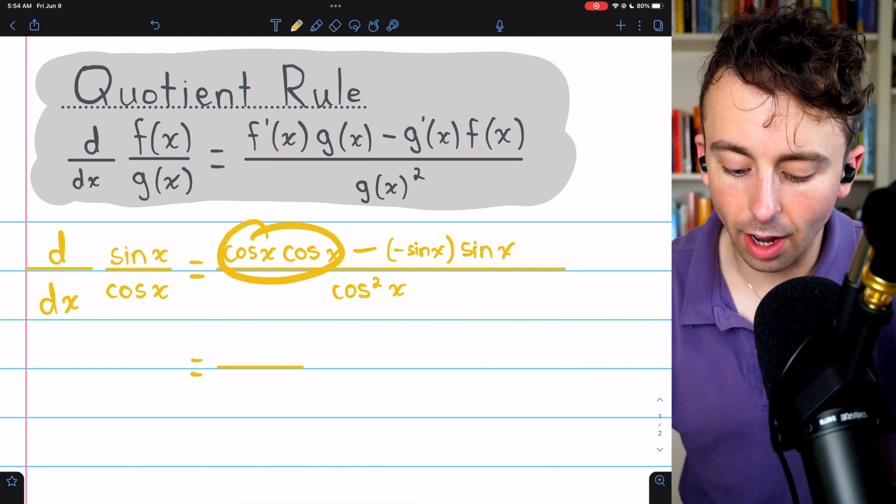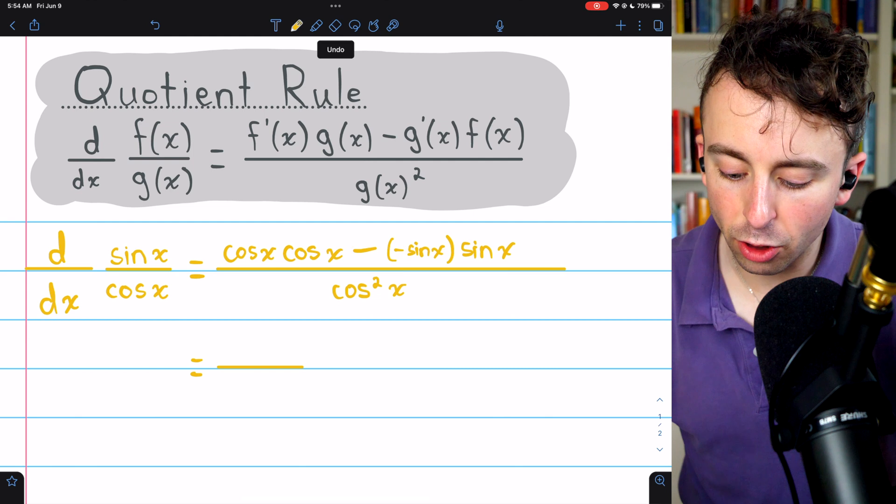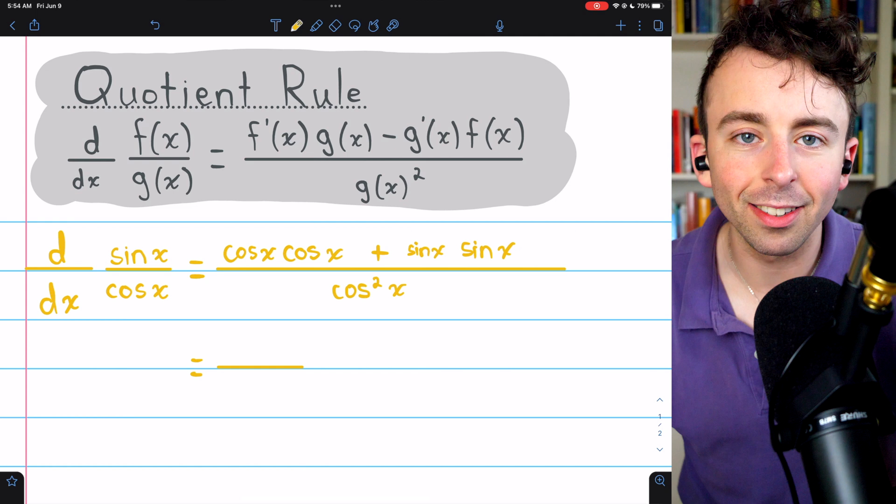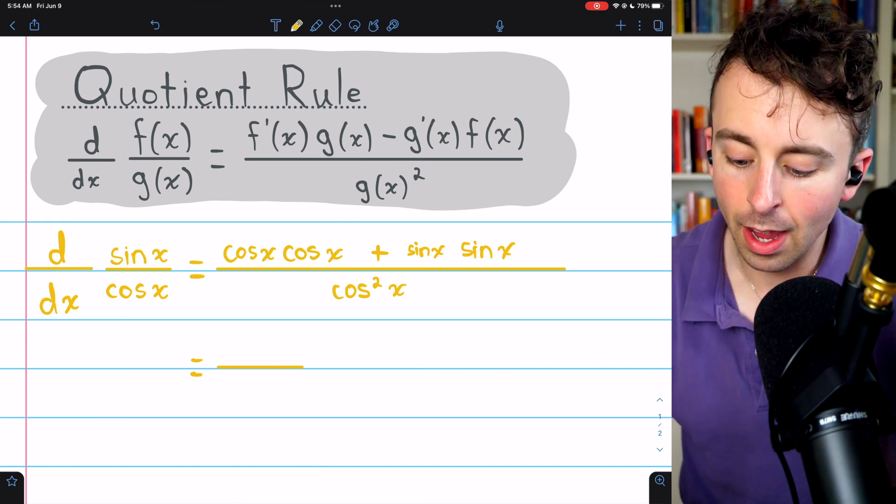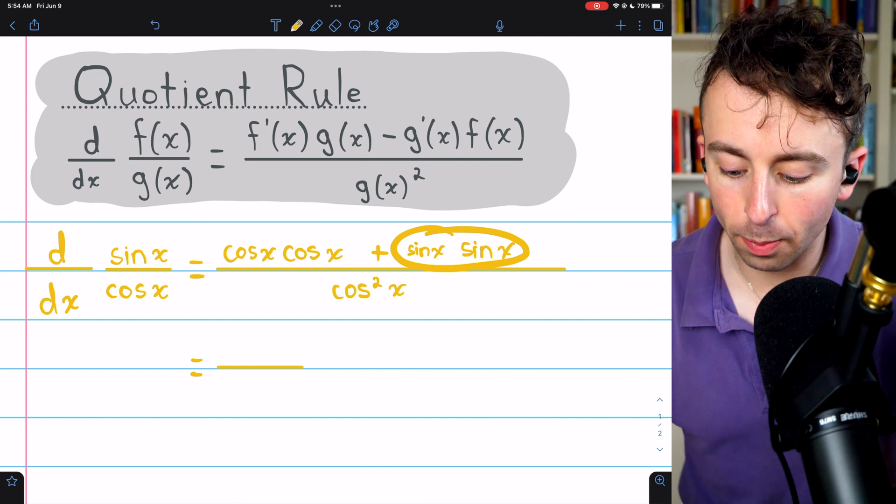And this simplifies very nicely because in the numerator, what we have is cosine squared. And then we actually have plus because we have two negatives. So we could just get rid of those parentheses and the minuses and just write this as plus. There are two negatives, so it's addition. And what we're adding is sine squared.